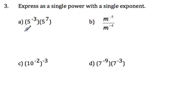Now here you have to remember the rules for power laws, exponent laws, and this is multiplication. So when you multiply powers with the same base, you add the exponents. So this is going to be negative 3 plus 7. And so this will be 5 to the power of negative 3 plus 7 is positive 4. So this is 5 to the power of 4.